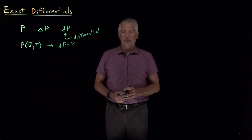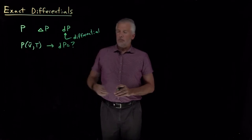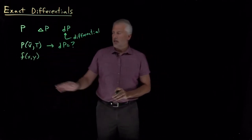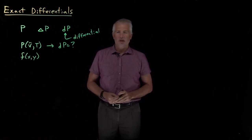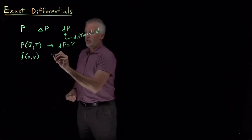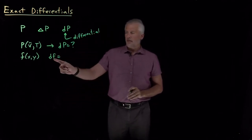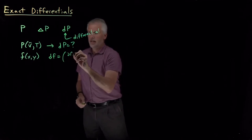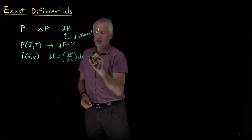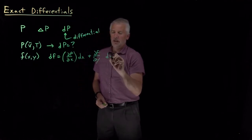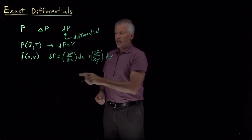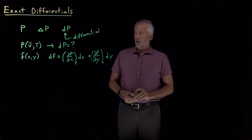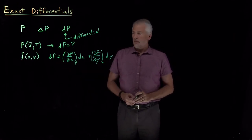We need to know: if we know the equation for pressure, what does that tell us about the change in pressure as we change volume or temperature? To keep things closer to what you may have learned in math, let's think about these functions generically as f(x, y). The differential change in f can be written as (∂f/∂x) dx + (∂f/∂y) dy, where ∂f/∂x is taken holding y constant, and ∂f/∂y is taken holding x constant.